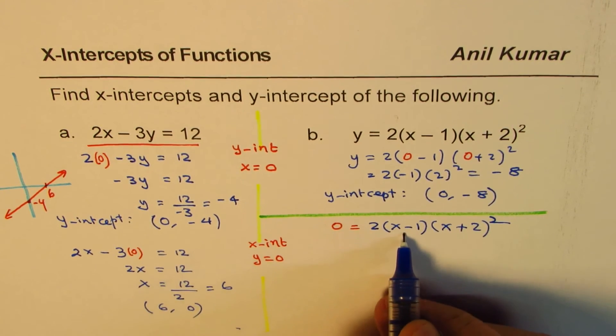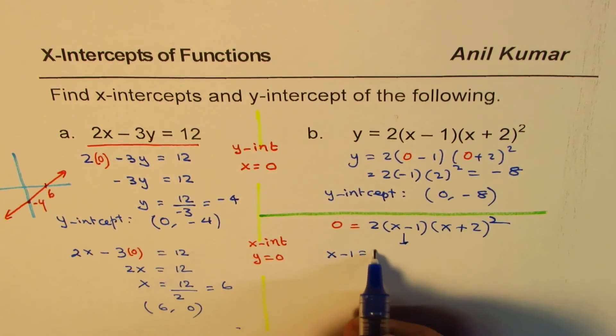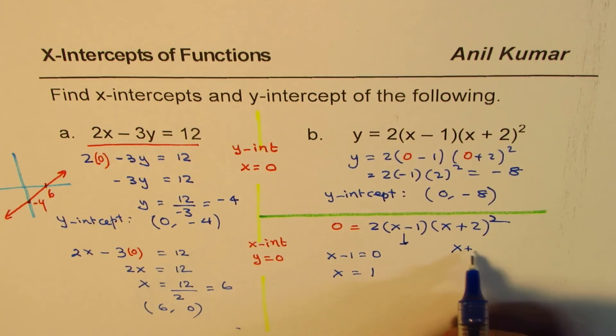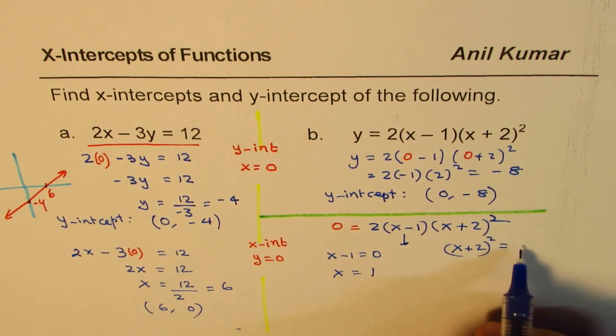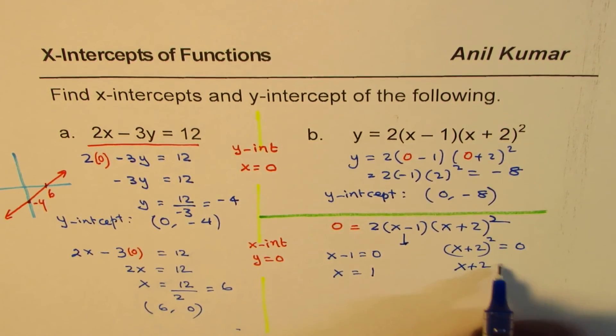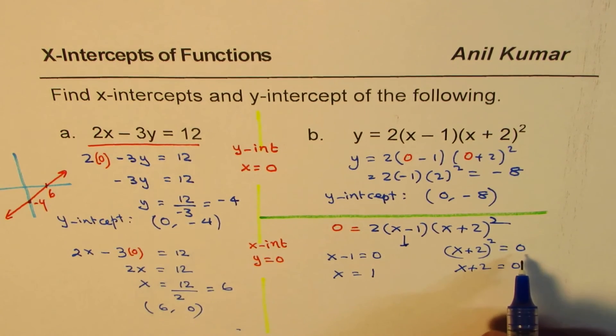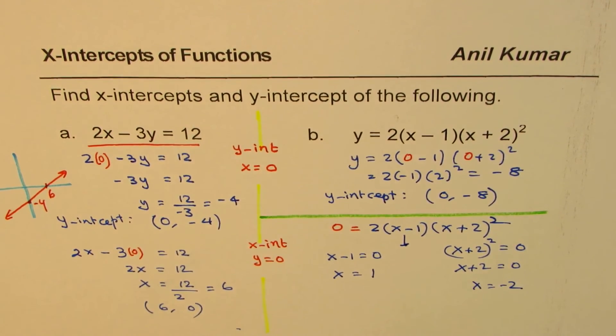So let's solve them. The first condition from here is x minus 1 equals 0, x is equals to 1. And the other one is x plus 2 whole squared equals 0, or x plus 2 equals 0. Square root of 0 is 0, or x equals minus 2.